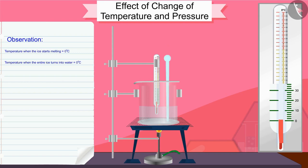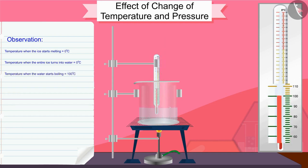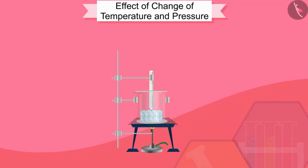Now put the glass rod in the beaker and heat it by stirring till the water starts boiling. Keep an eye on the measurement of the thermometer until most of the water vapor is formed. Note down the observation in the change from the liquid state to the gaseous state of water.